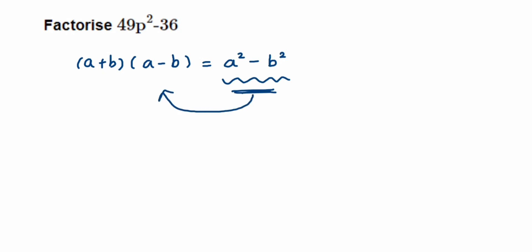So a² means 49 is the square of which number? It's 7. So we can write 49p² as (7p)² because p also has a square. So (7p)² becomes 49p². Therefore, in place of a we will write 7p.